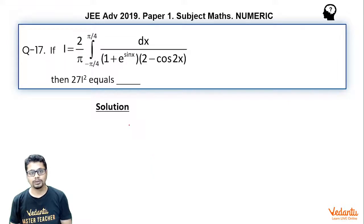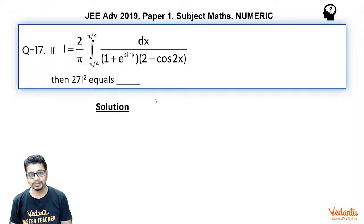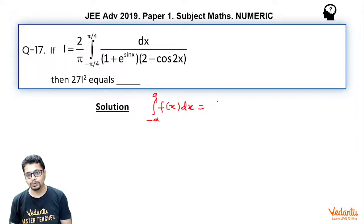Seeing such an expression, a property of definite integration should come to your mind, which is: the integral from −a to a of f(x) dx equals the integral from 0 to a of [f(x) + f(−x)] dx.